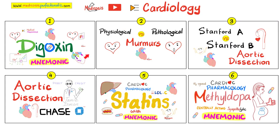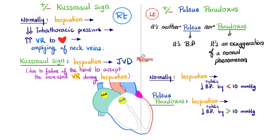This is my cardiology playlist — please watch these videos in order. Next: Kussmaul sign versus pulsus paradoxus. Kussmaul sign is a phenomenon on the right side of the heart, namely the neck veins. As for pulsus paradoxus, it's a phenomenon on the left side of the heart, namely the blood pressure — not the pulse. That's a misnomer.